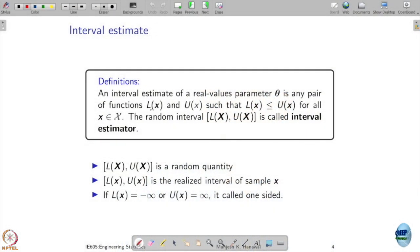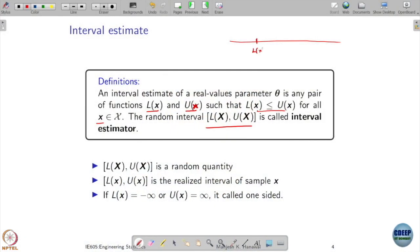So what we want to now do is given a random sample X, instead of coming up with one value, we are going to come up with a set. An interval estimation of real valued parameter theta is any pair of functions L(X) and U(X) such that L(X) is going to be smaller than U(X) and this should happen for all possible samples. And this random interval is called an interval estimator.